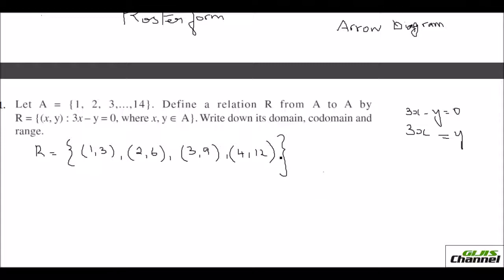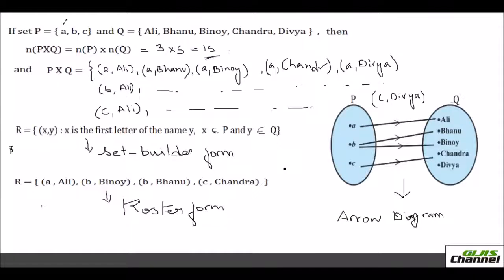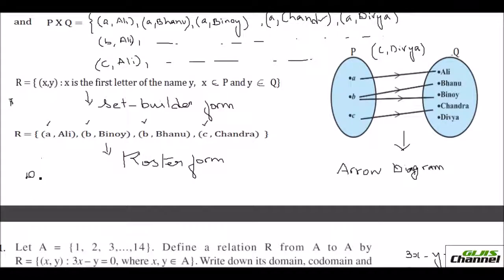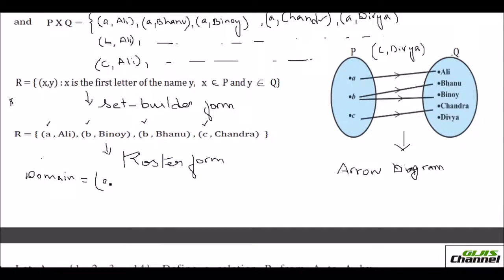Now you should know what is the domain, co-domain, and range. Looking at the previous example in roaster form: all the first elements of the ordered pairs form a set called the domain. In this example your domain would be the first elements in the ordered pairs which are A, B, C.